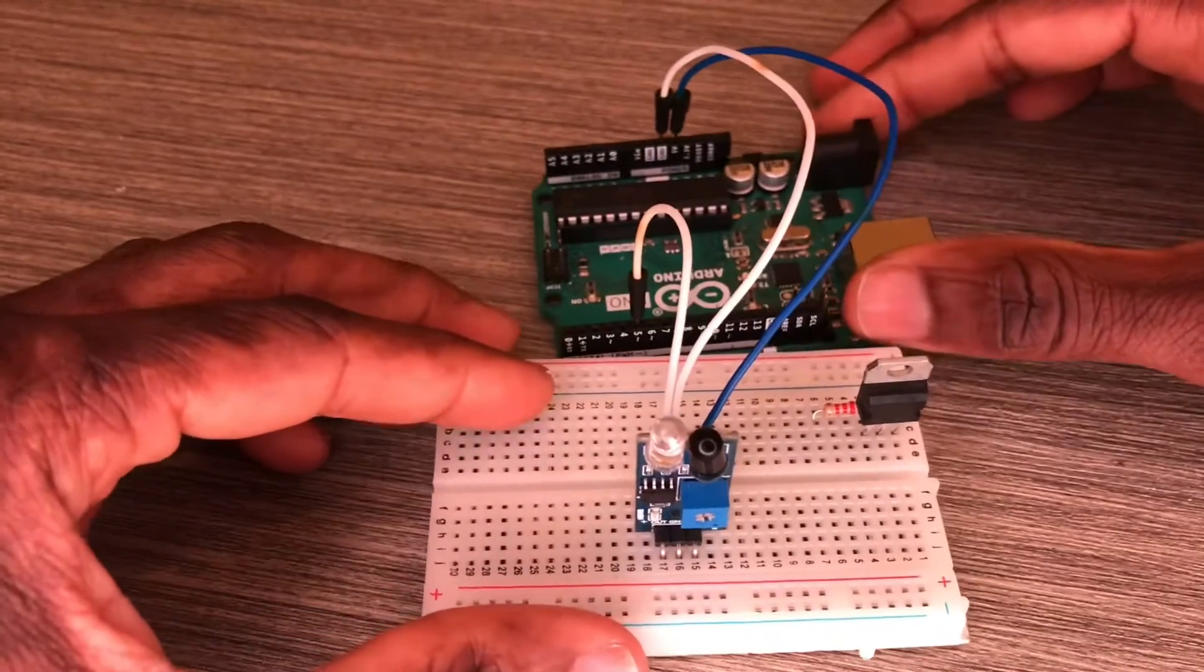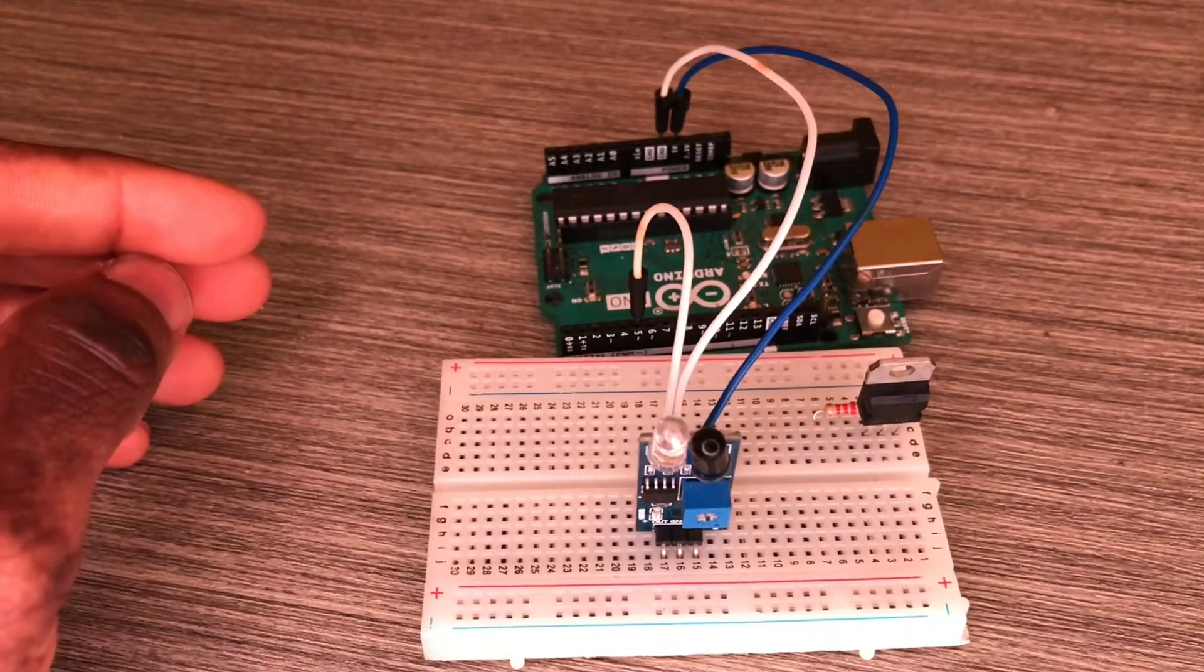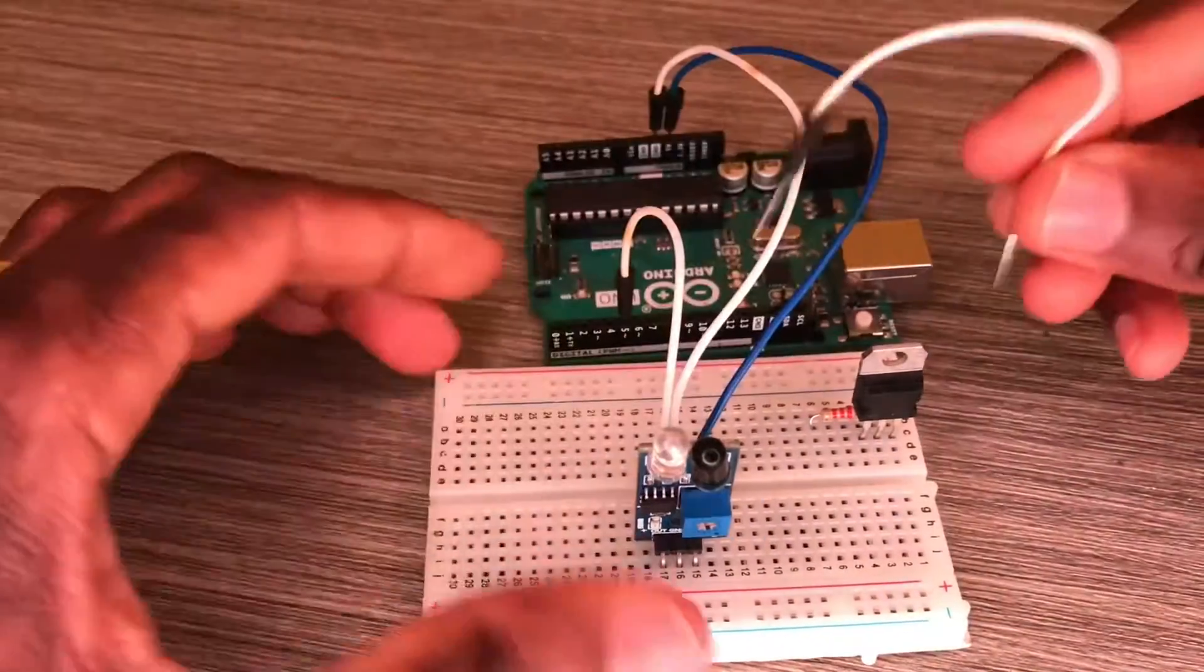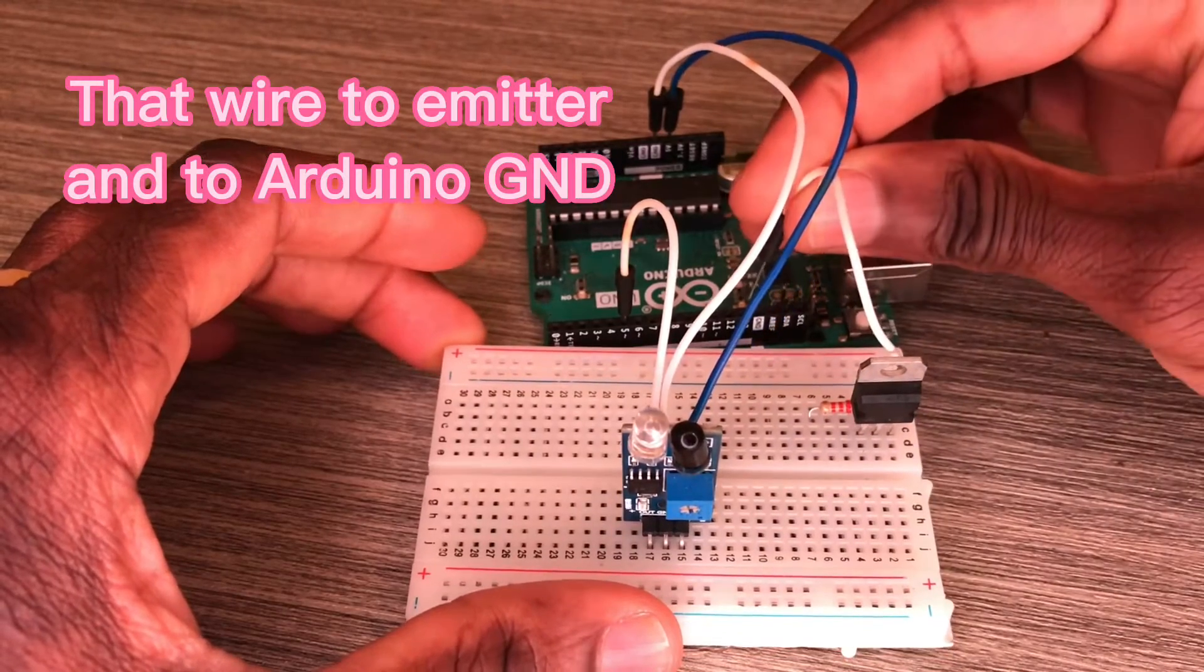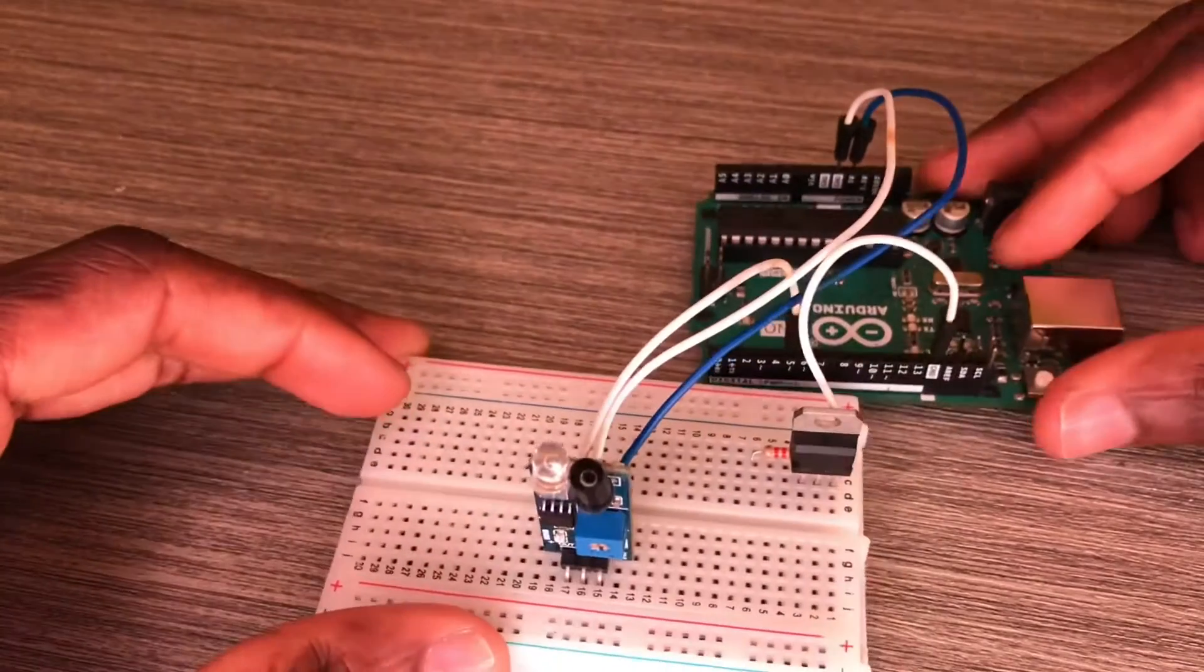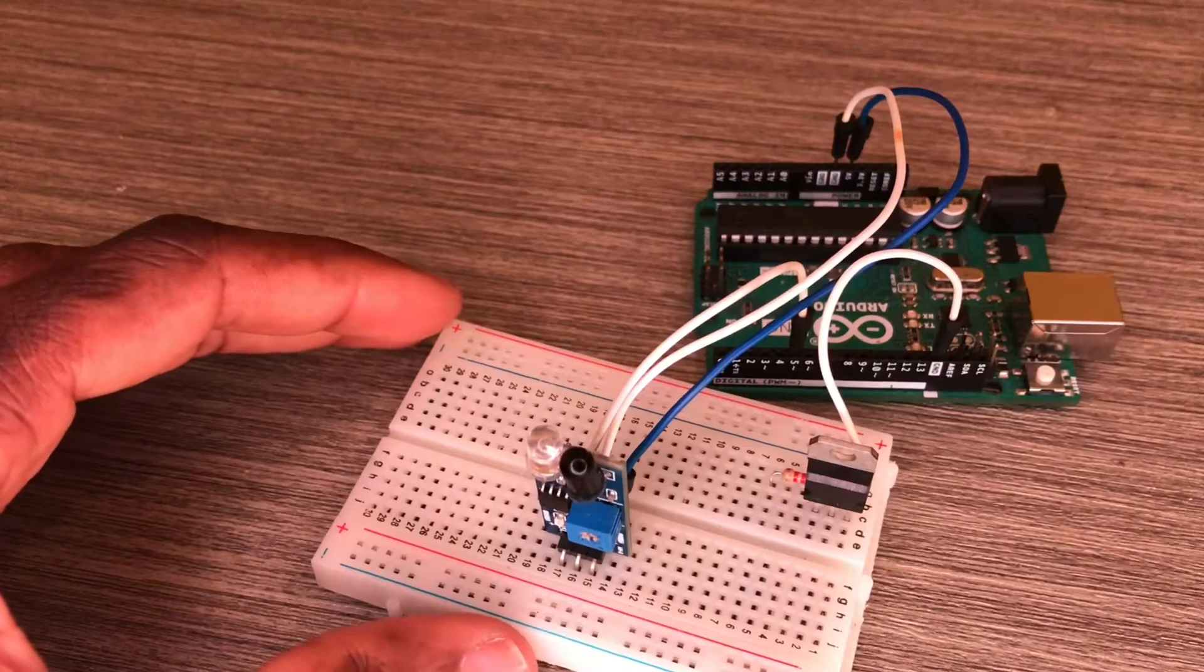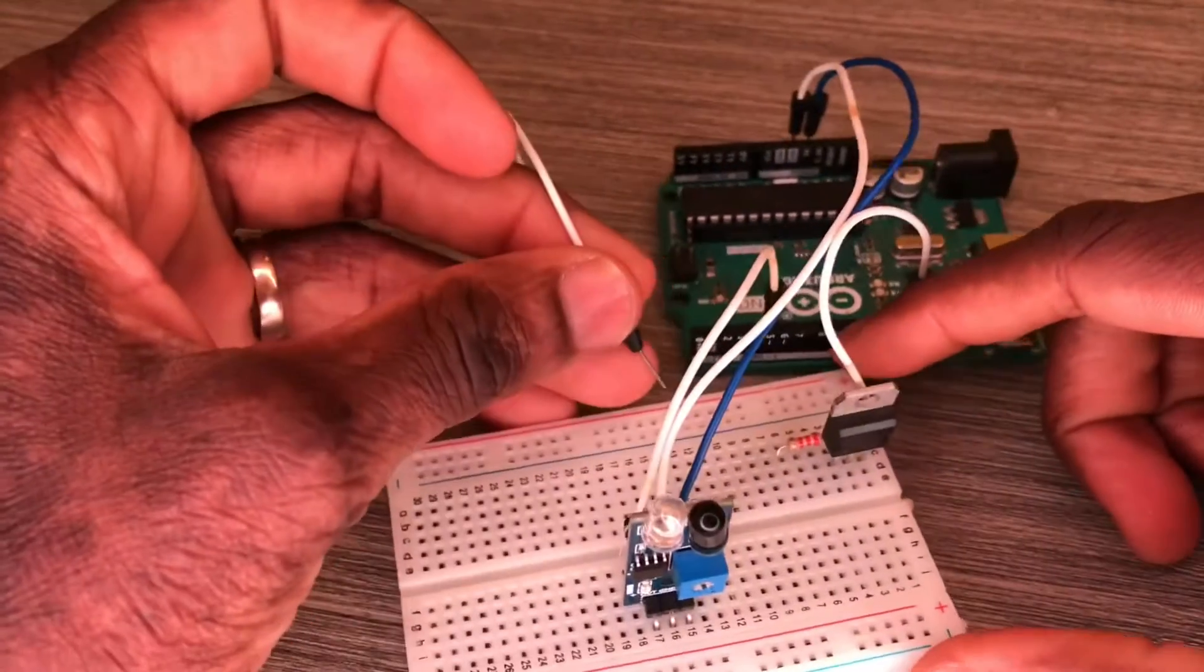A cable goes to ground - that's the emitter of the TIP120 NPN transistor.